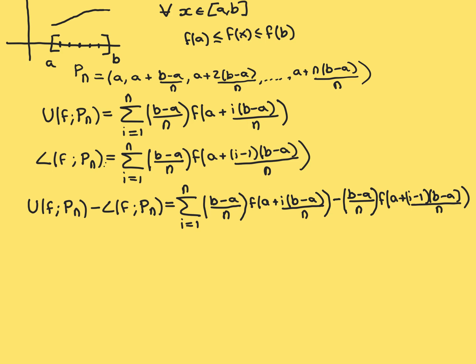We're trying to use these to show that our function always obeys the integrability criterion. What we now need to do is consider the upper Riemann sum for the function over a partition Pn minus the lower Riemann sum for the function over that same partition Pn. We are fixing an n here and need to consider what this difference is going to be.